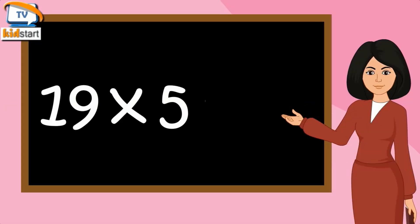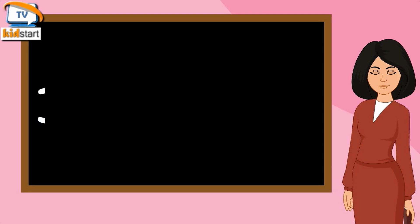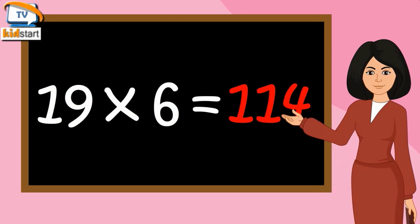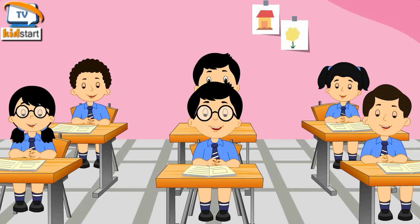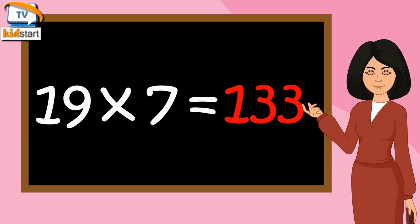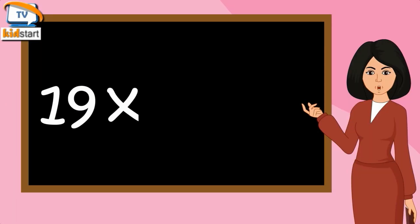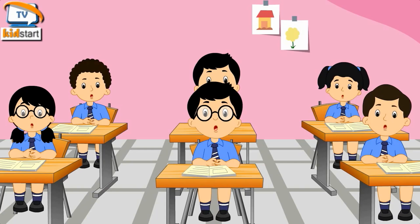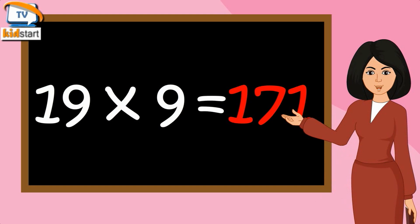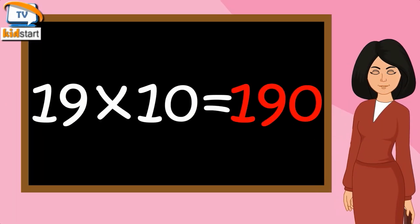Nineteen fives are ninety-five. Nineteen sixes are one hundred and fourteen. Nineteen sevens are one hundred and thirty-three. Nineteen eights are one hundred and fifty-two. Nineteen nines are one hundred and seventy-one. Nineteen tens are one hundred and ninety.